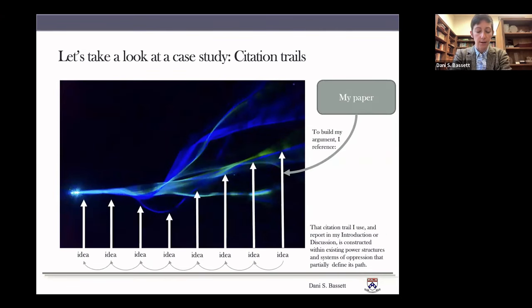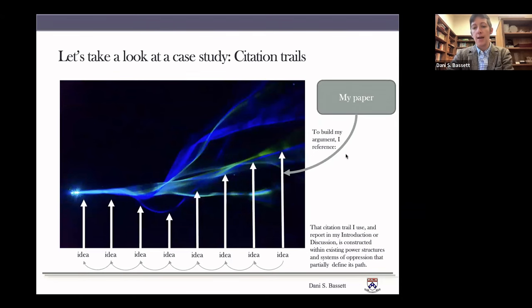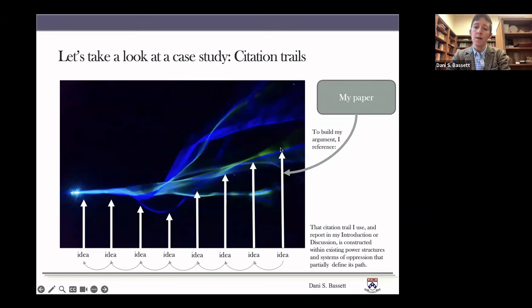To think through this correspondence between branched flow and the way we do science more concretely, I want to look at a case study of citation trails. A citation trail is what I'm building in the introduction or discussion of a paper — an idea that builds on a previous idea, which itself builds on a previous idea, and so on, back into the past.